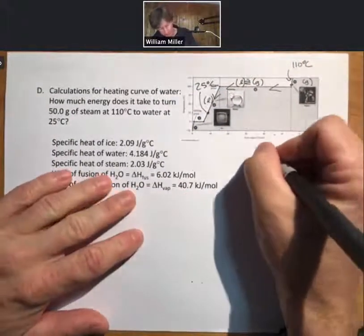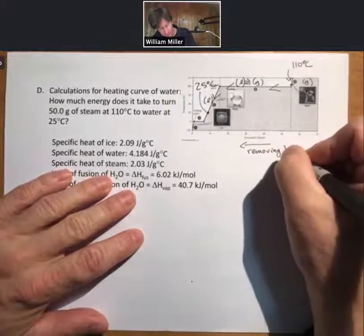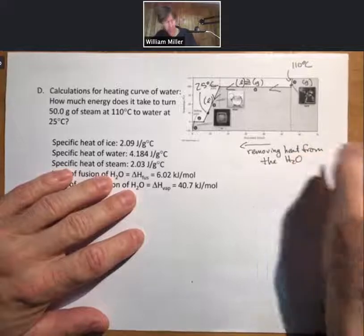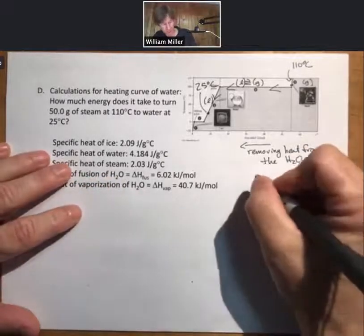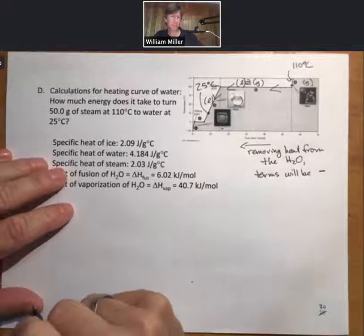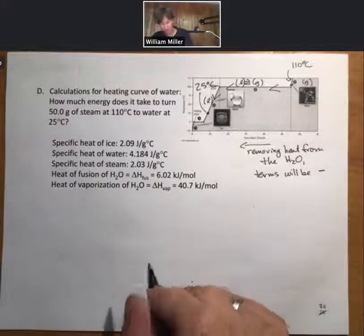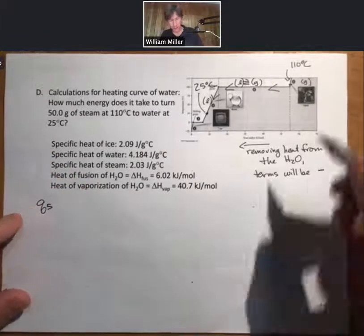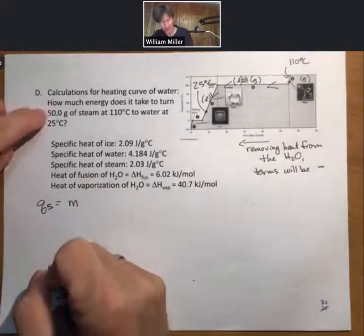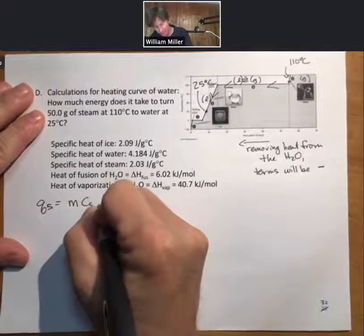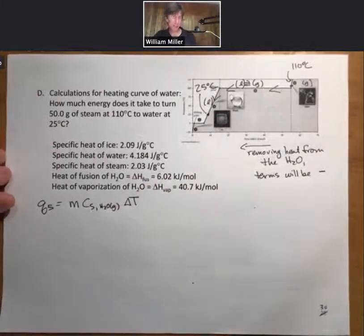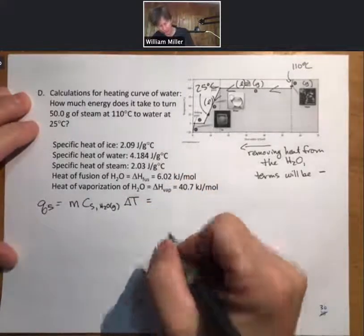Now we are then going to be removing heat from the water, or from the H2O, let's say. And therefore all of our terms for these terms will be negative, because you can add heat, you can also take it away. All right, so the first thing I'm going to do is I'm going to do Q5. Here I have a change in temperature, so I'm going to need my mass of my H2O, I'm going to need my specific heat of my H2O gas, and I'm going to need my delta T.